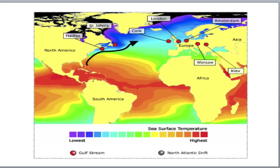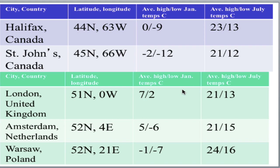Now we're going to look at one of those warm ocean currents and the impact it might have on climate. We're going to compare places in Canada like Halifax to cities in Europe at slightly higher latitudes — like London, Amsterdam, and Warsaw — almost the exact same latitude. However, they have very, very different climates. Study the average temperatures for both the highs and lows during January and February in the table — the upper cities are from Canada, the lower ones are from Europe. Notice the latitudes.